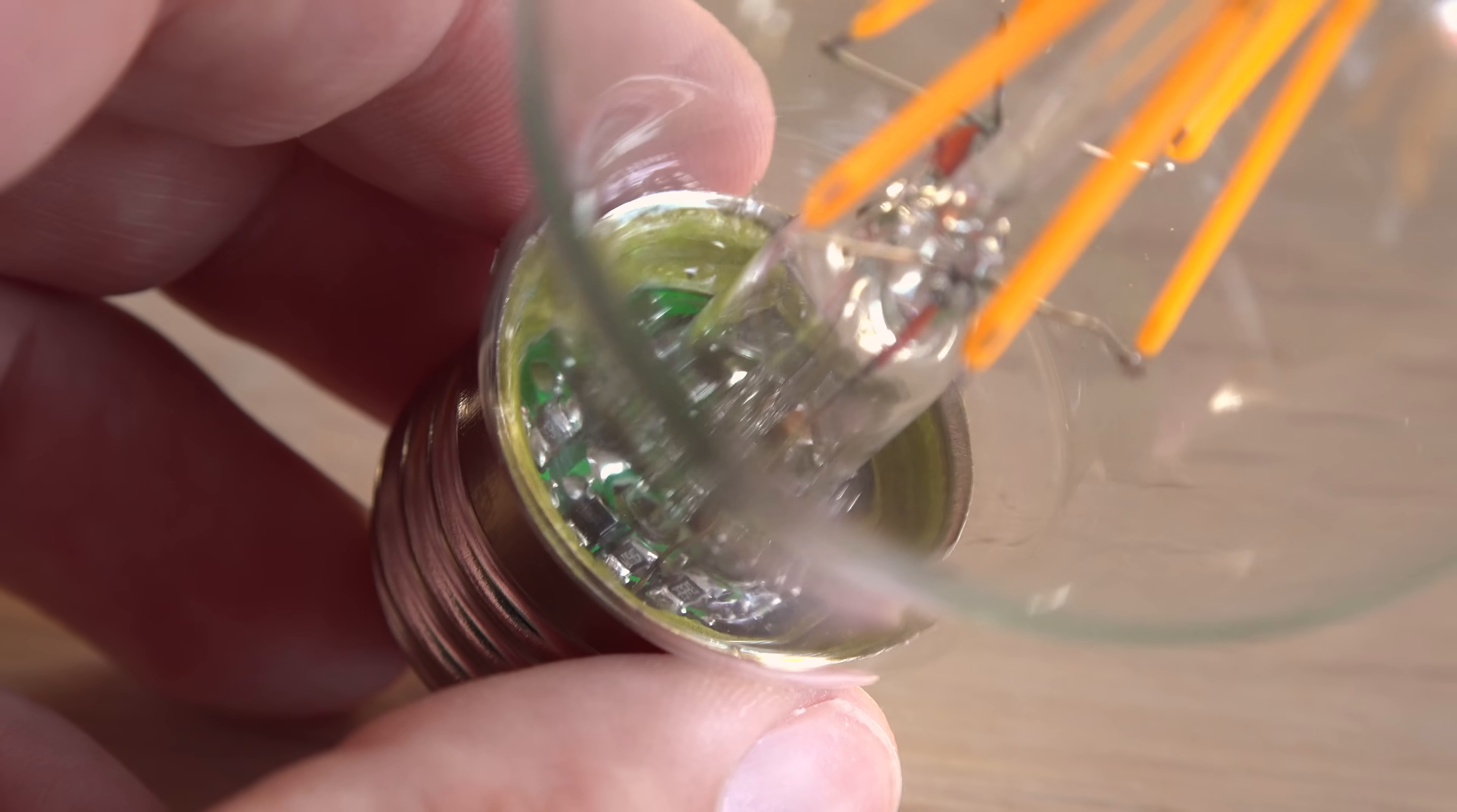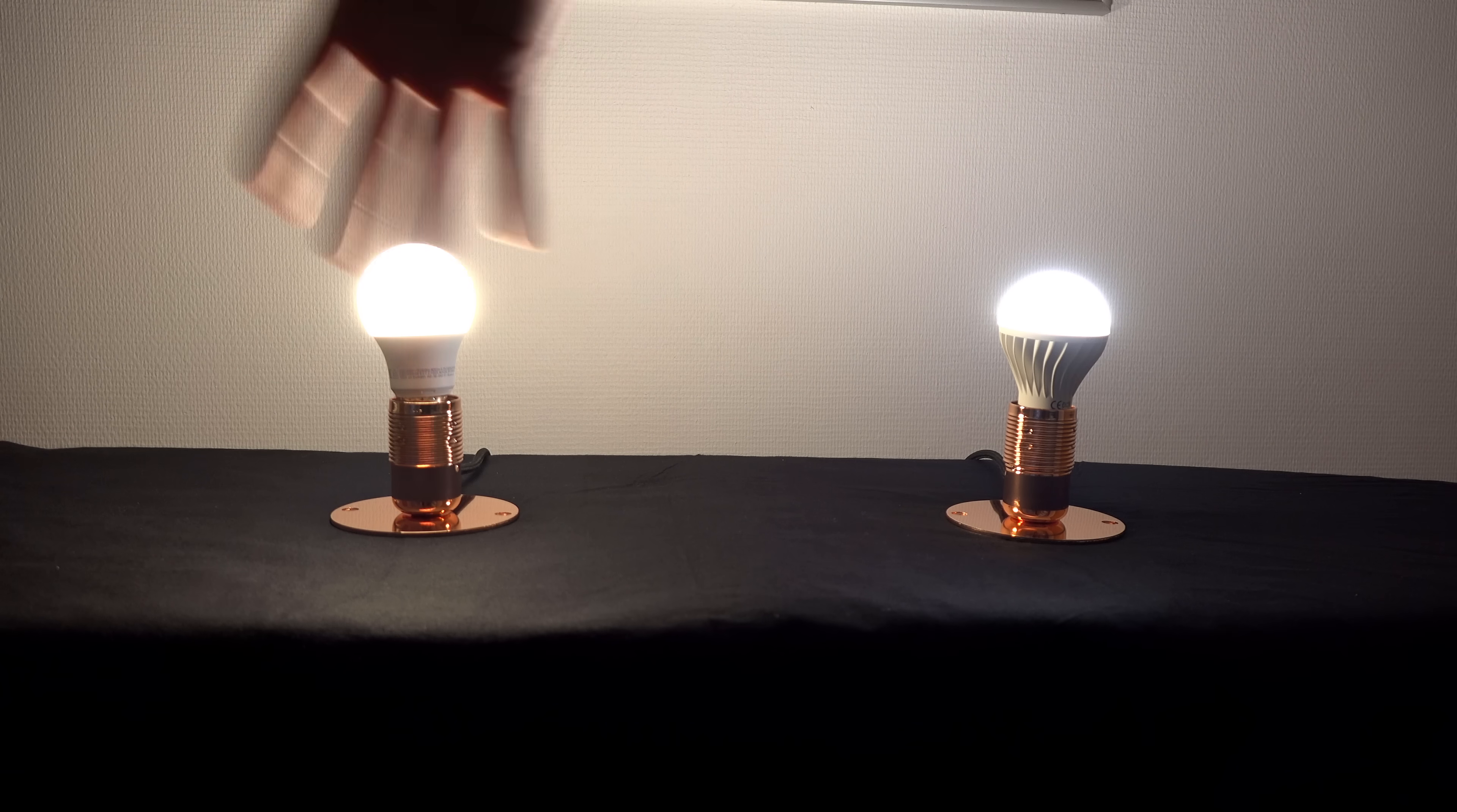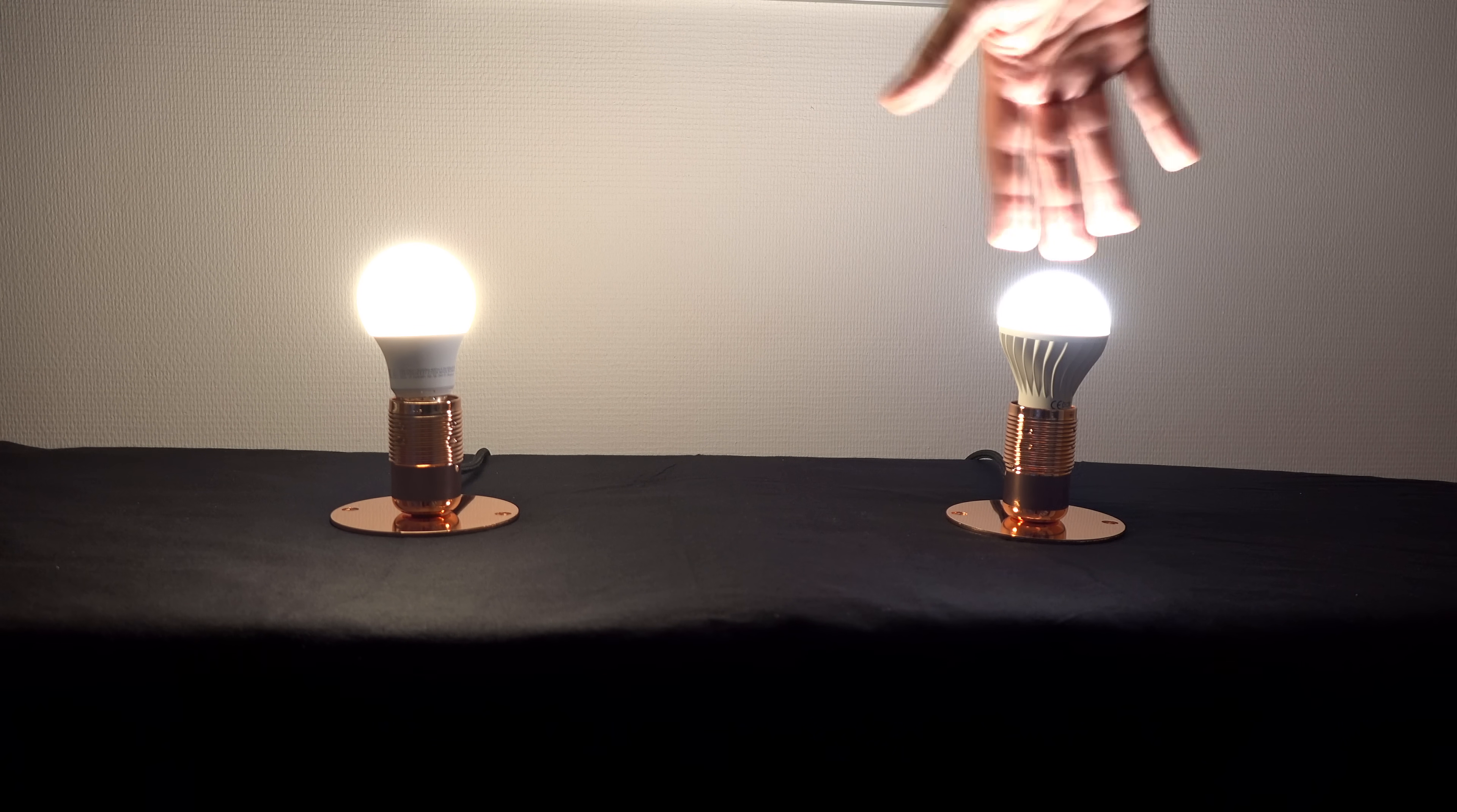LEDs also need electronics built into the bulb to work. The semiconductors need direct current and not the alternating current from the mains electricity. If the electronics are poorly designed LEDs can flicker badly. It's not easy to film but hopefully you can tell which of these two is flickering the most.